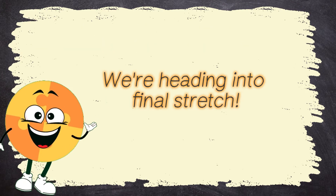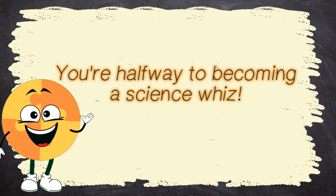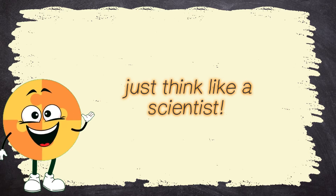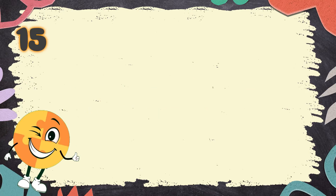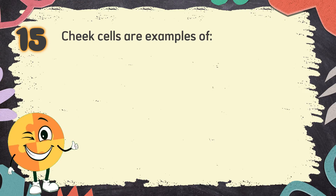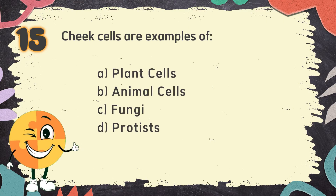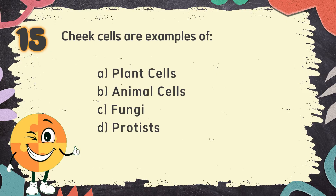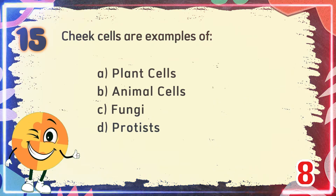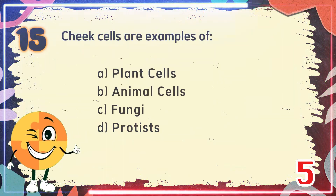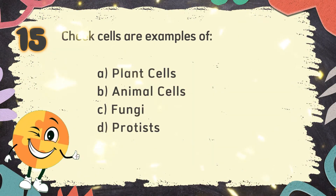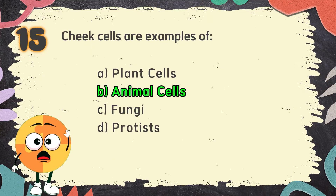We're heading into the final stretch — you're halfway to becoming a science whiz! Remember, even if a question seems tough, just think like a scientist. Number 15: Cheek cells are examples of — The choices are: A. Plant cells, B. Animal cells, C. Fungi, D. Protists. The correct answer is B. Animal cells.